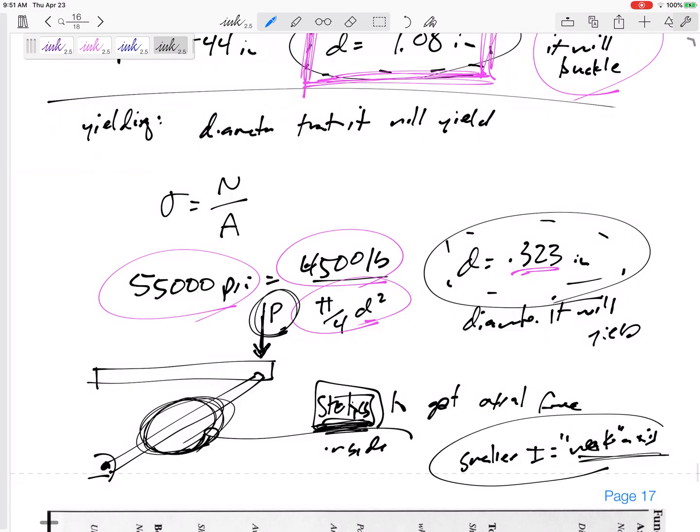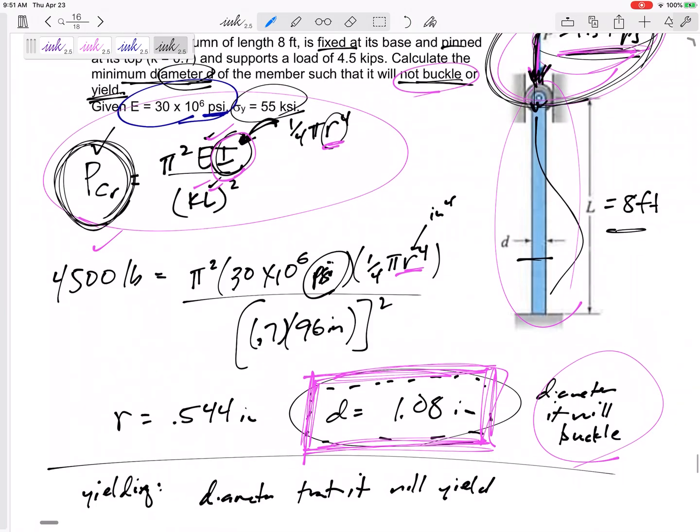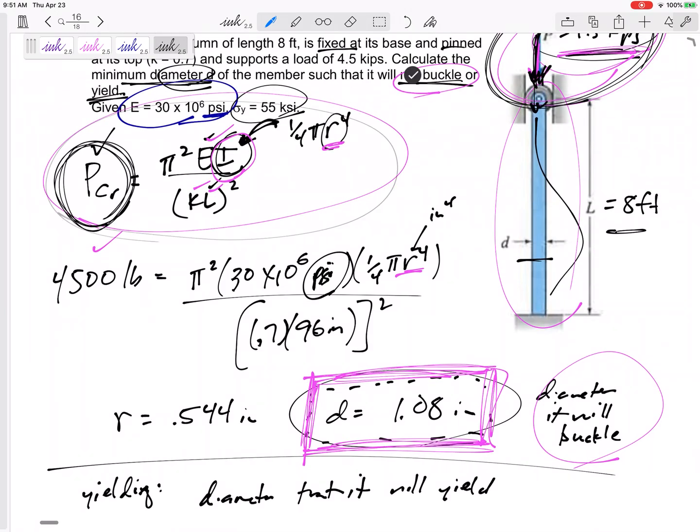So if they are supported differently, I want you to do two different problems. Let's calculate buckling about the weak axis, and it says the weak axis is fixed-fixed.